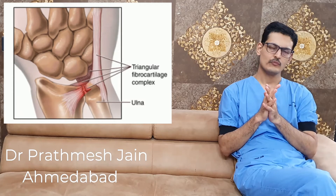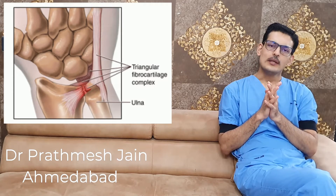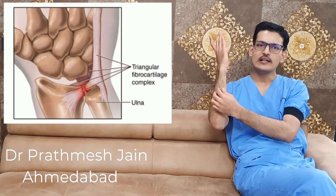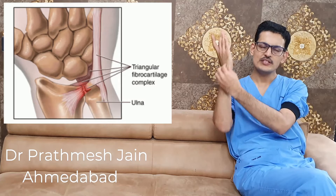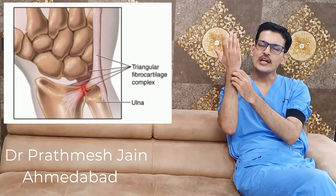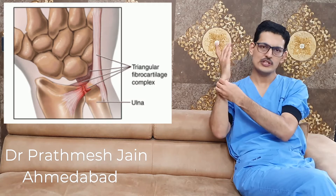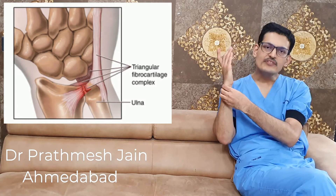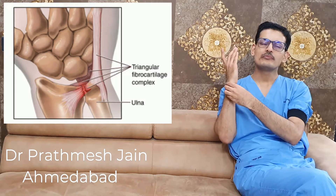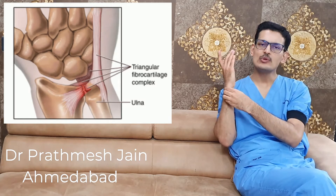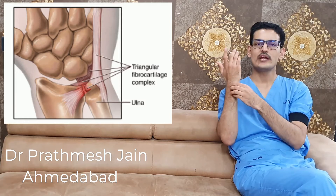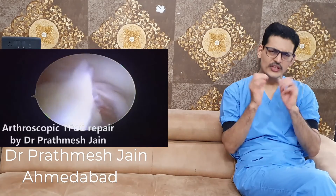The patient will have pain on the ulnar aspect of the wrist. Occasionally there will be instability, and the TFCC joint will give rise to a distal radio-ulnar joint (DRUJ) instability, which may be seen in some cases.